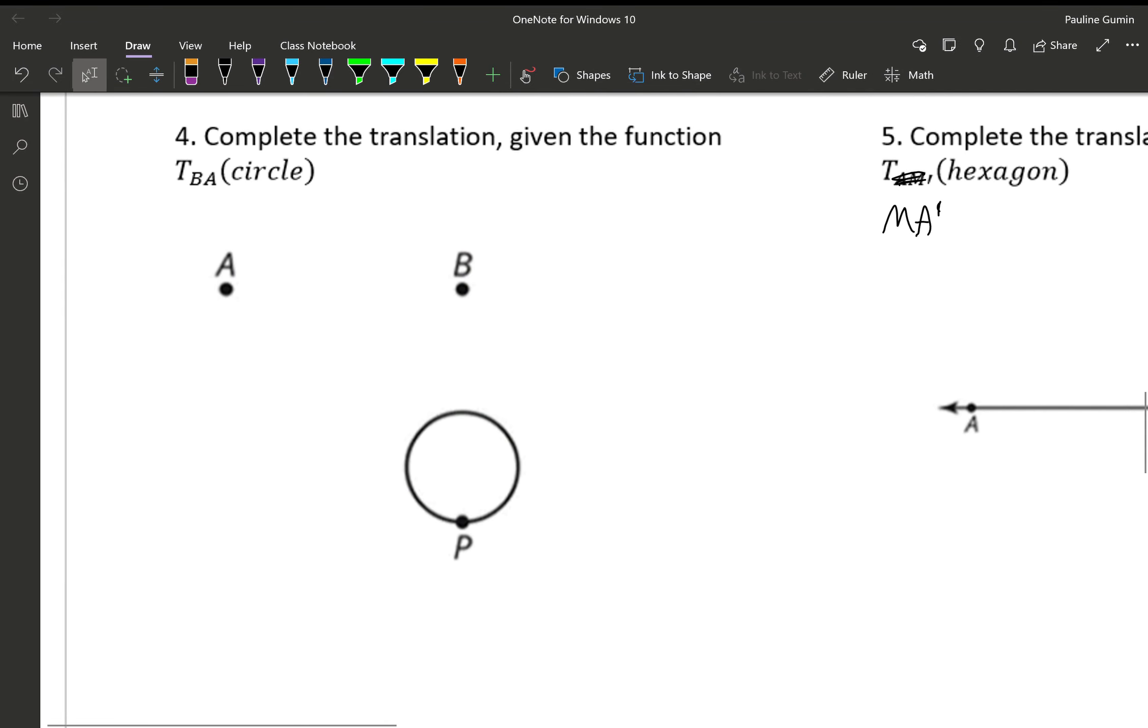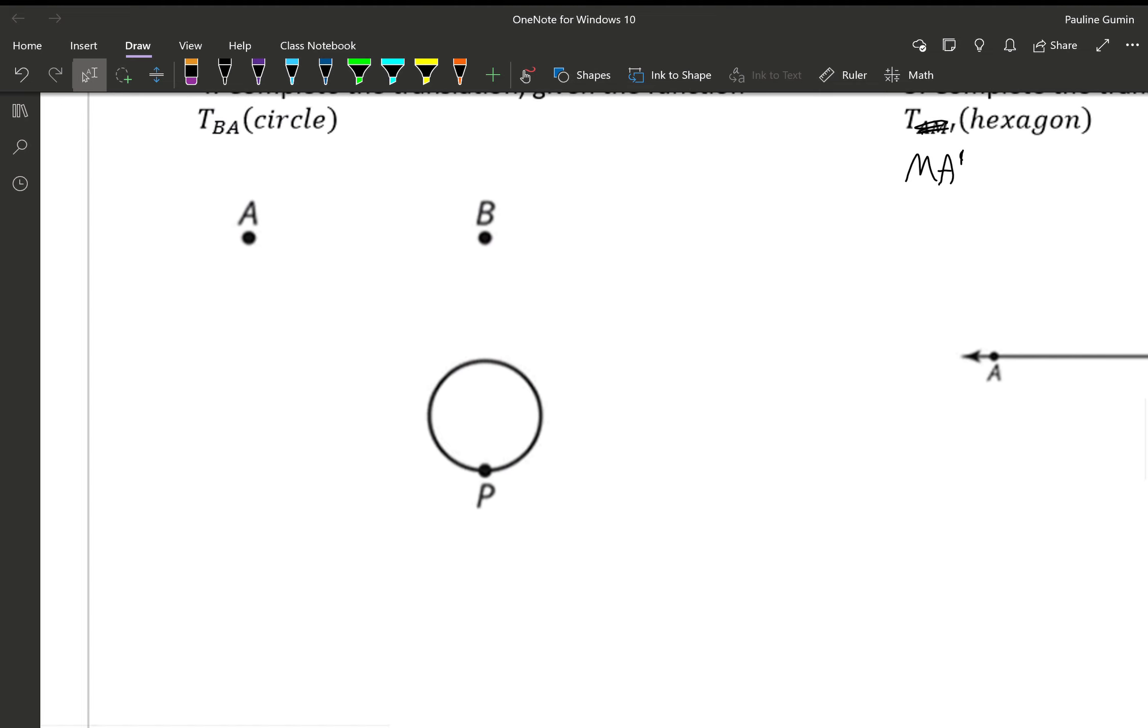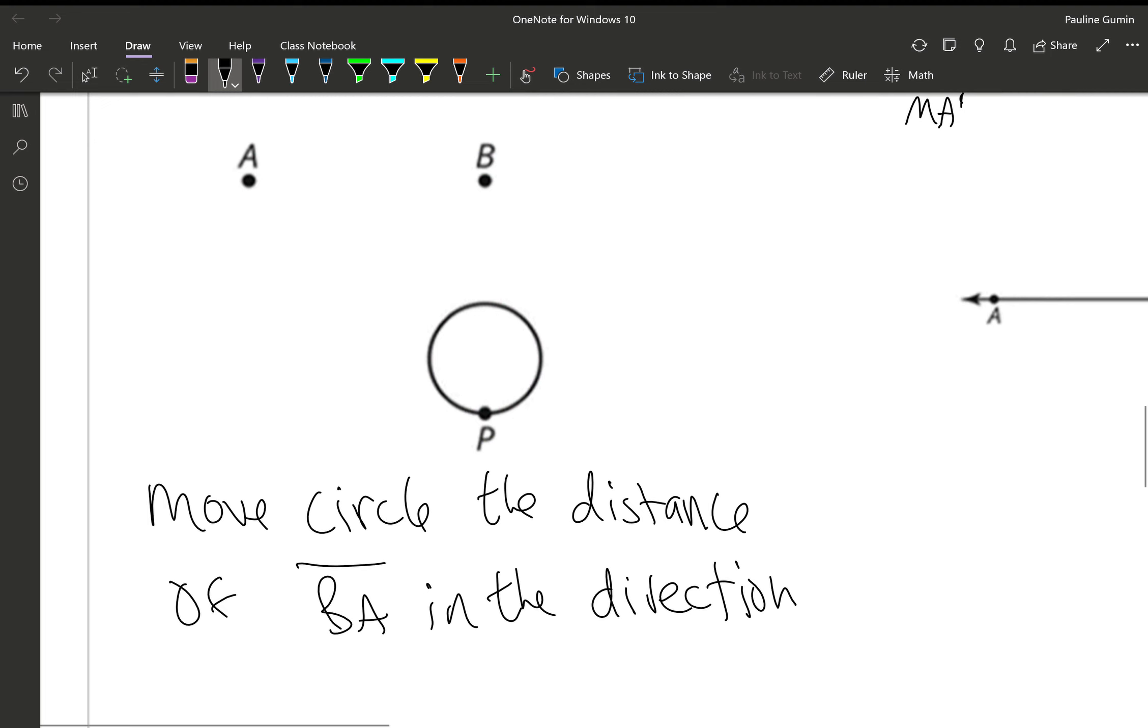All right. Let's continue. Number four. TBA circle. This means move circle the distance of BA. And again, this really does matter, the order of those letters, and the direction of BA.